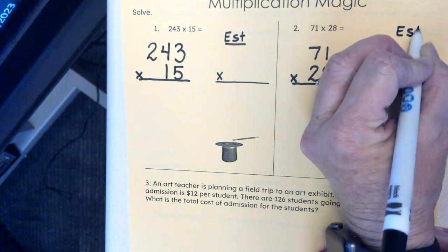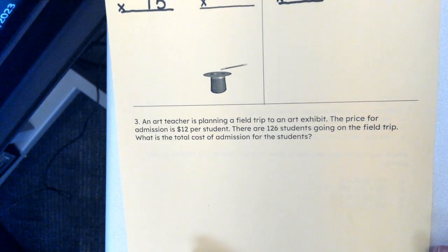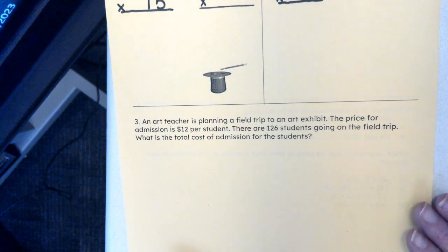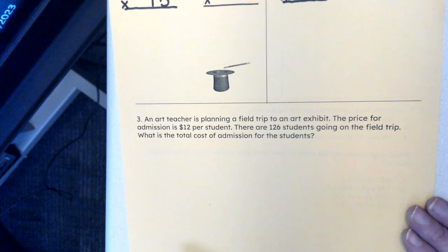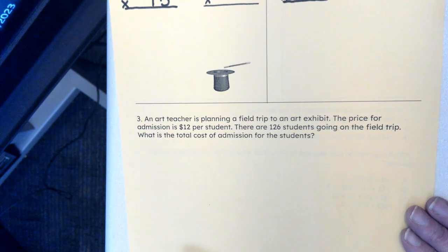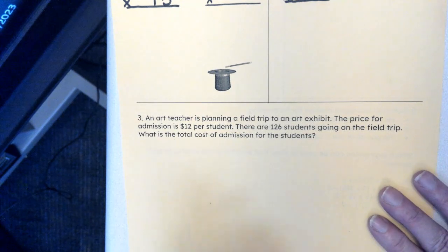That's one and two. Go ahead and write 'estimate' up here so you know what that is. And then for number three, I'm going to read that one out loud: An art teacher is planning a field trip to an art exhibit. The price for admission is $12 per student. There are 126 students on the field trip. What is the total cost of the admission for the students?